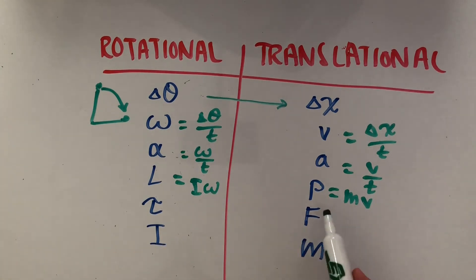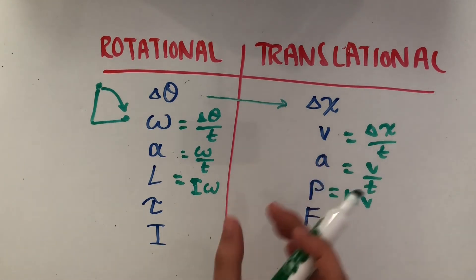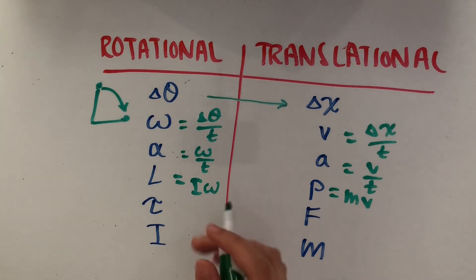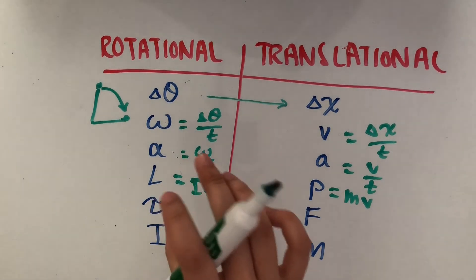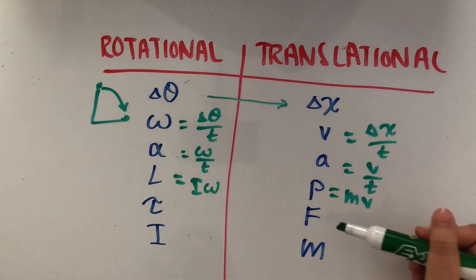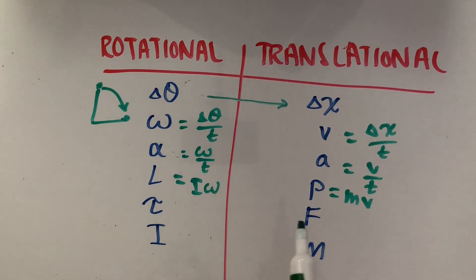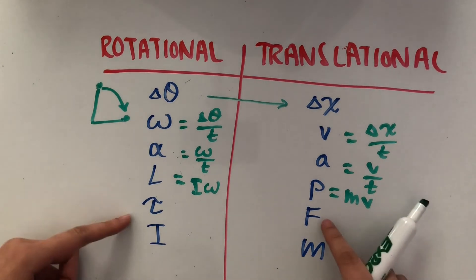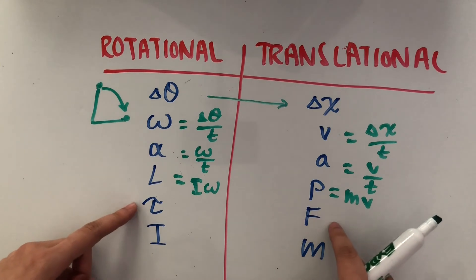Torque τ is kind of like force F, because torque is basically anything that makes an object rotate, and force is what makes objects move. Since rotational motion is when an object turns or spins, and translational motion is when an object moves linearly, both of these are counterparts of one another.